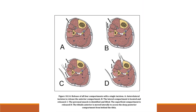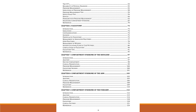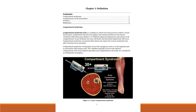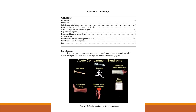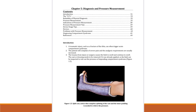We have 20 chapters, and these are the chapters of the book along with the contents of each chapter. Chapter 1 covers the definition, Chapter 2 covers the etiology, and Chapter 5 covers fractures and bone injuries in the lower extremity with a tendency to develop compartment syndrome.